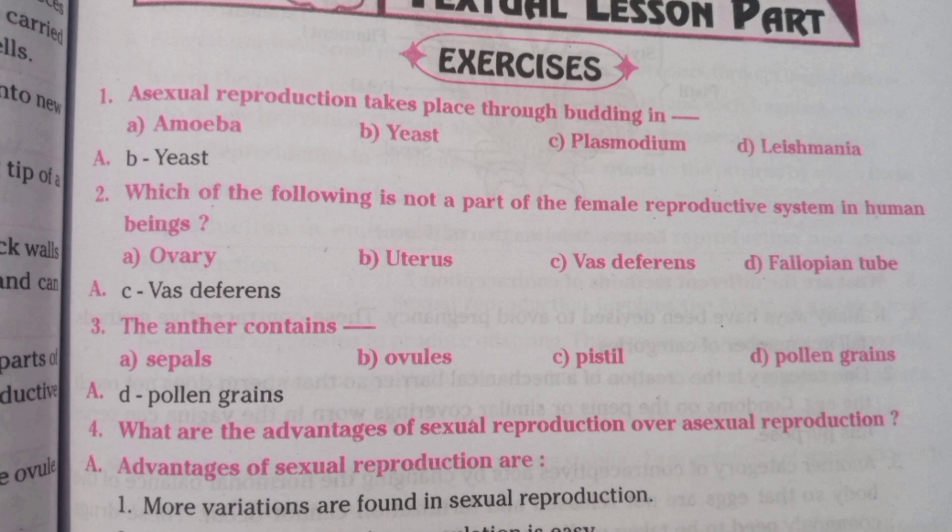What are the advantages of sexual reproduction over asexual reproduction? The advantages of sexual reproduction are: first, more variations are found in sexual reproduction.